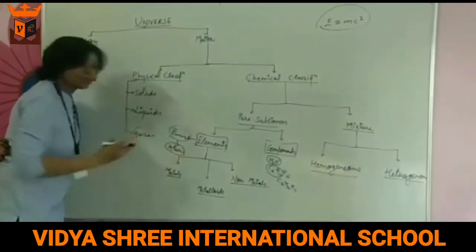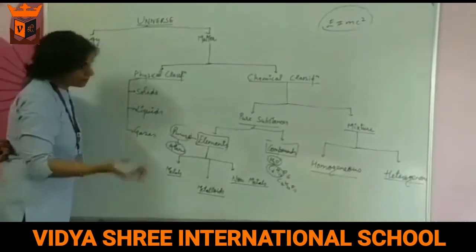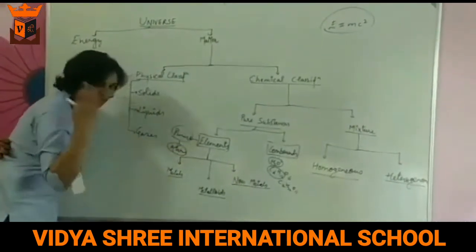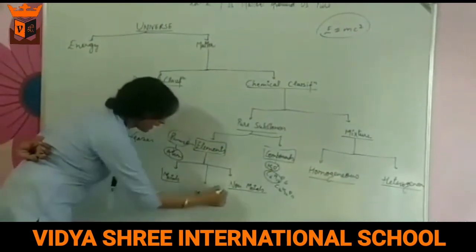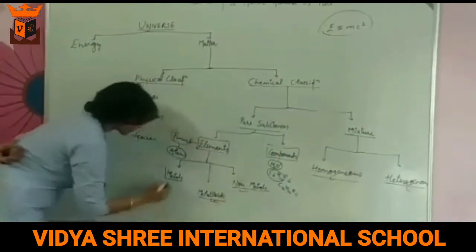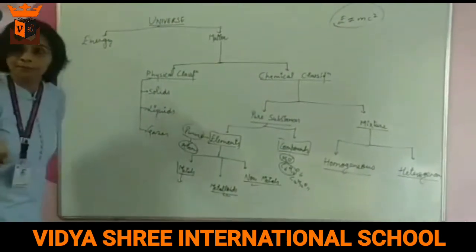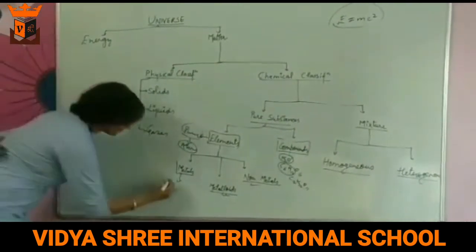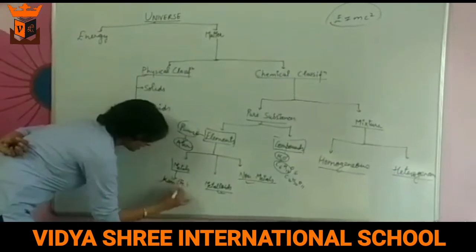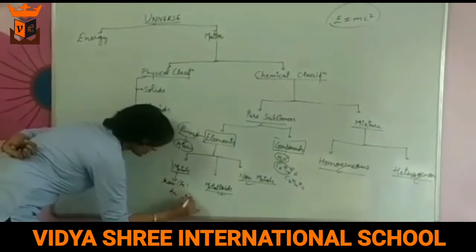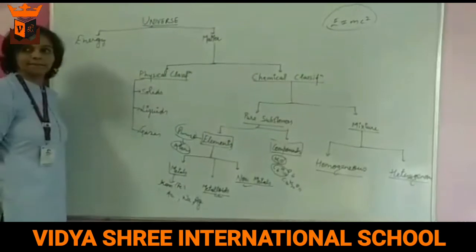Those same kind of atoms can be metalloid, metal, or non-metal. So elements can be categorized into three: metals, non-metals, and metalloids. Examples of metals include zinc, iron, gold, silver, sodium, and copper.